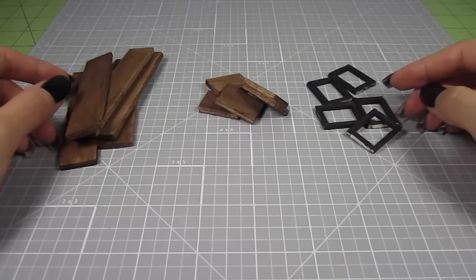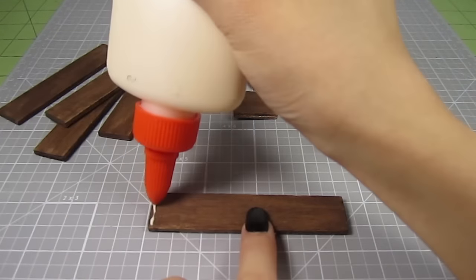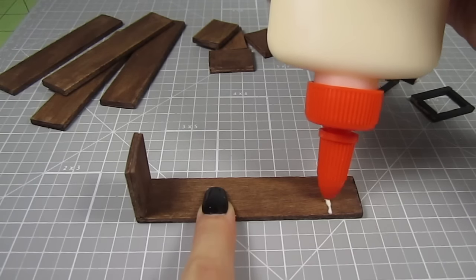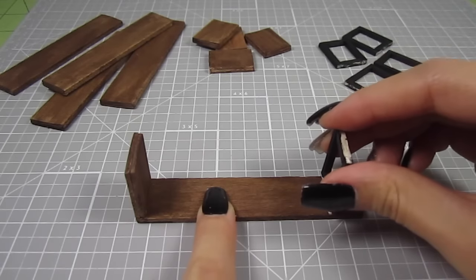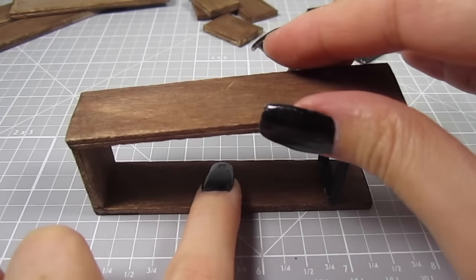Once all the paint is dry, we can get to the best part, which is assembling it. I take one long shelf and add a line of glue to one end. Then position one of the shorter pieces vertically on top of it. Add another line of glue half an inch away from the other end. Position one of the matchstick rectangles on top of there. Add some glue to the tops of these short pieces and put on another shelf.